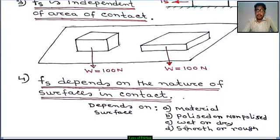Frictional force depends on whether the surface is wet or dry — the coefficient of friction for a wet surface and a dry surface are different. Frictional force also depends on whether the surface is smooth or rough — the coefficient of friction for smooth or rough surfaces are different.